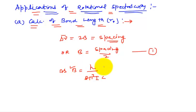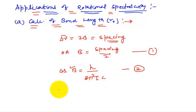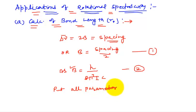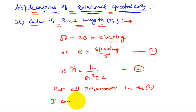B has been calculated from equation 1, and you place the value of B. Here h is constant, π is constant, c is constant — this is expression number 2. Put all parameters into equation 2, and I, that is the moment of inertia, can be calculated.